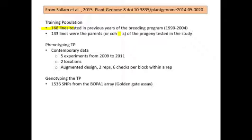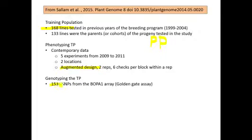These 168 lines were developed in the breeding program and tested from 1999 to 2004. Of those 168 lines, 133 were used to produce progeny, and those progenies are then divided up into what we would call the prediction populations. Phenotyping the training population used an augmented design, and SNP genotyping is the same as shown in the previous study.